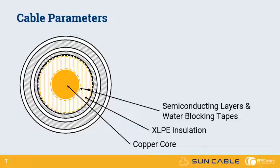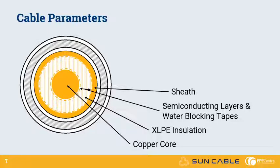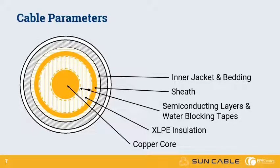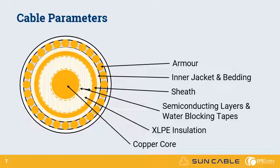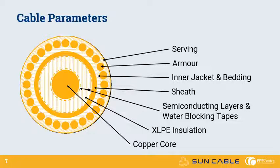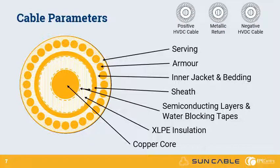The model also includes the outer layers, which is the sheath, jacket, bedding, armour and serving. The HVDC link has three cables, a positive, a negative and a metallic return, which has a thinner main insulation. The greatest challenge in modelling the cable accurately was in representing the field joints, which we will discuss.